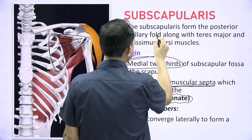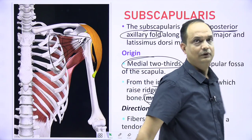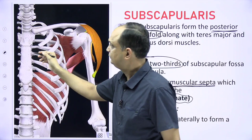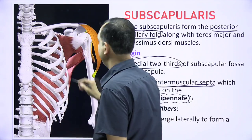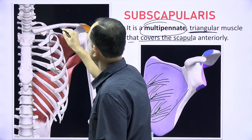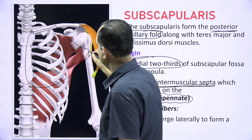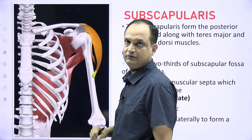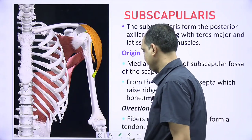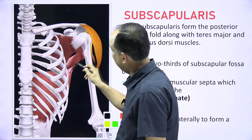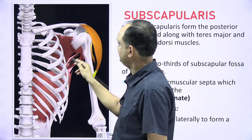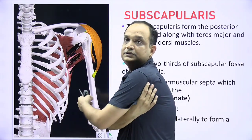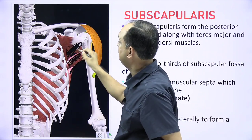Subscapularis also contributes to the posterior axillary fold. In this diagram we have removed the anterior wall of the axilla, which is formed by pectoralis major. After removing pectoralis major you can see the posterior wall, which has three muscles. The lowest part is formed by latissimus dorsi, then above that teres major, and some component of the lower part of subscapularis.